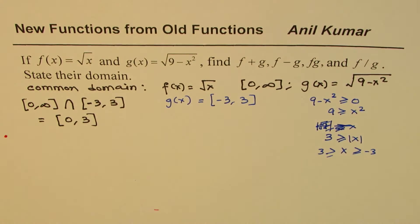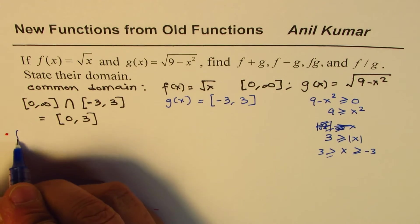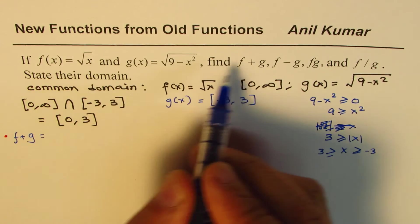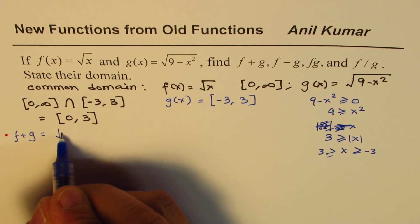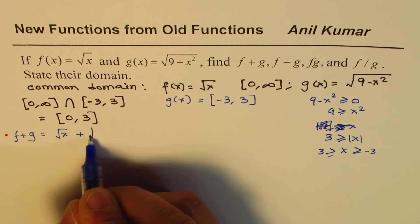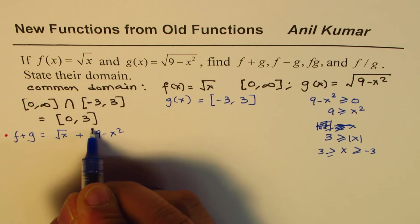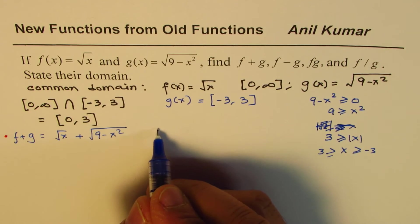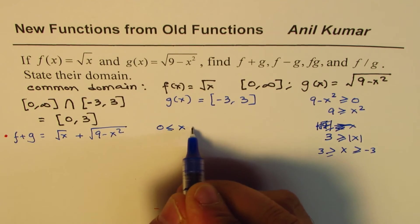First one here is f plus g. So f plus g is a combination of these two with addition operation. So we have square root of x plus square root of 9 minus x squared, and this is valid between this particular domain which is from 0 to 3.